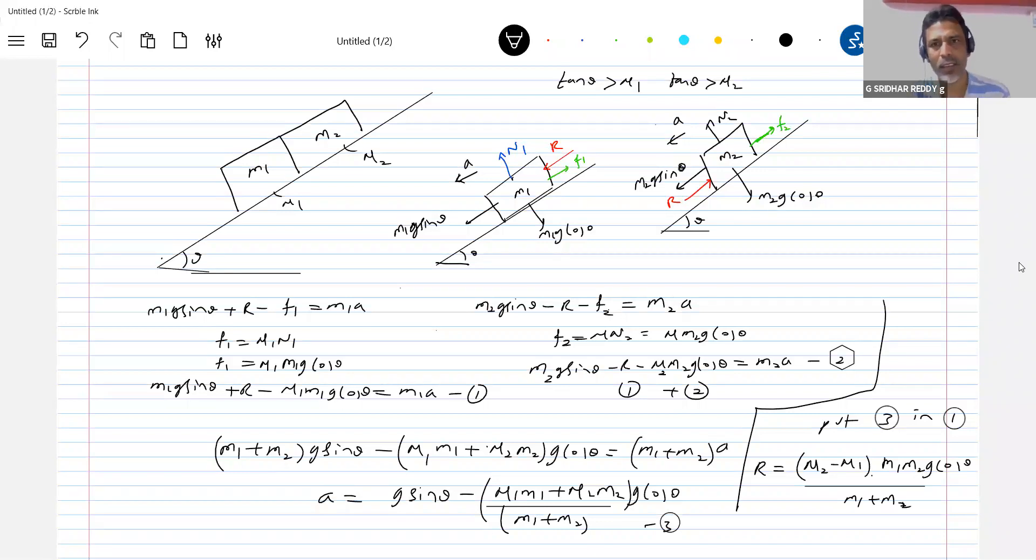Now look at this, the expression for reaction. When will they be in contact? In any condition, can you write it? For them to be in contact, definitely mu2 should be greater than mu1. See, for the blocks to be in contact, what is the required necessity condition? R should be greater than 0. For r to be greater than 0, mu2 should be greater than mu1. If mu2 less than mu1, r will be negative. Negative means they lose contact here.